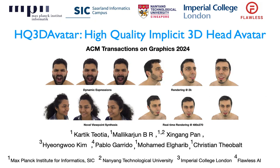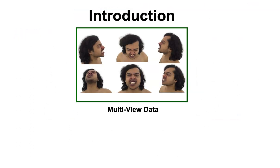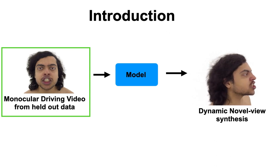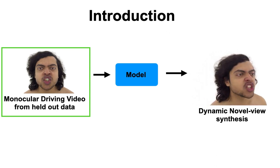We present HQ3D Avatar, a new approach to render human heads at high quality using multi-resolution hash encoding. Our approach is trained using multi-view data, and the end goal of our model is to create a high-quality personalized 3D head model. During inference, our model can be controlled from a monocular input and can be viewed from arbitrary camera viewpoints.